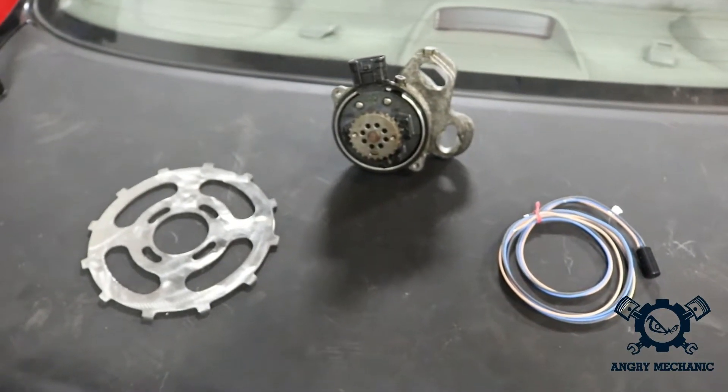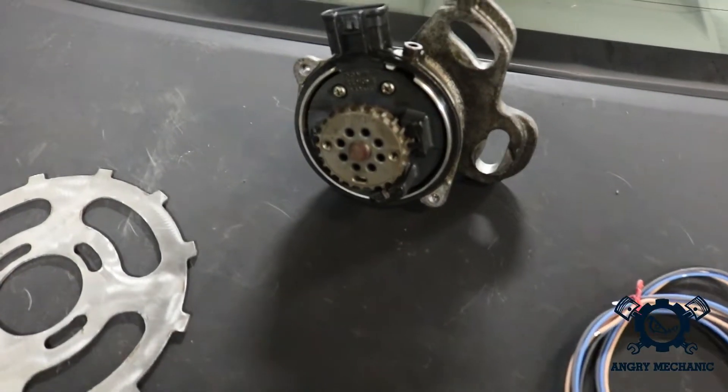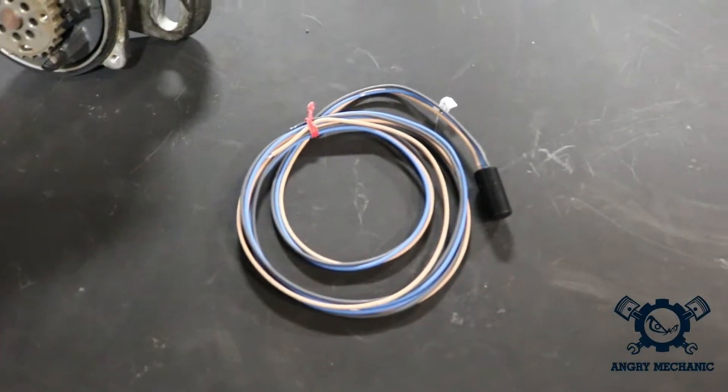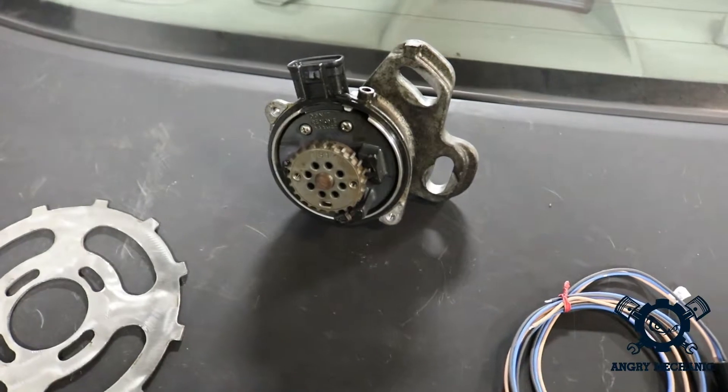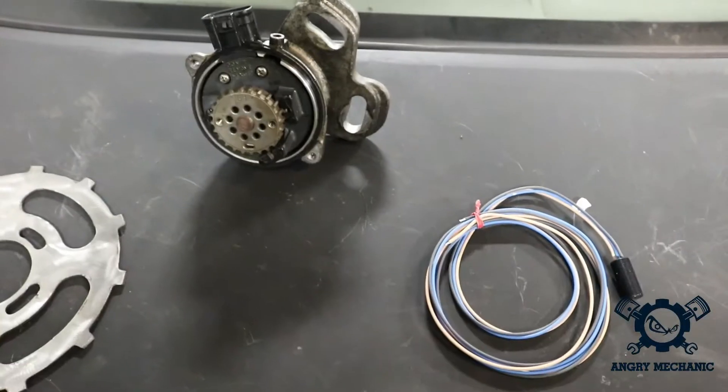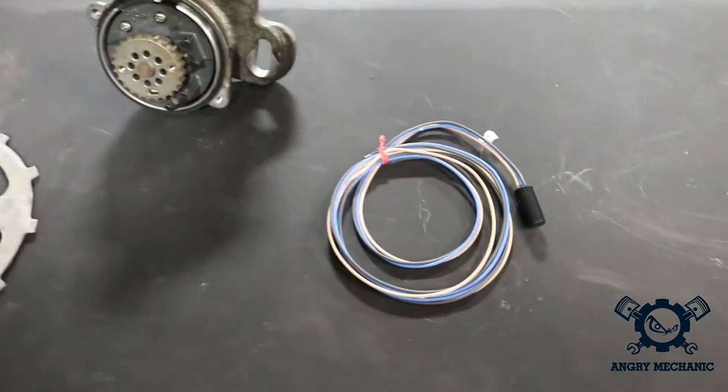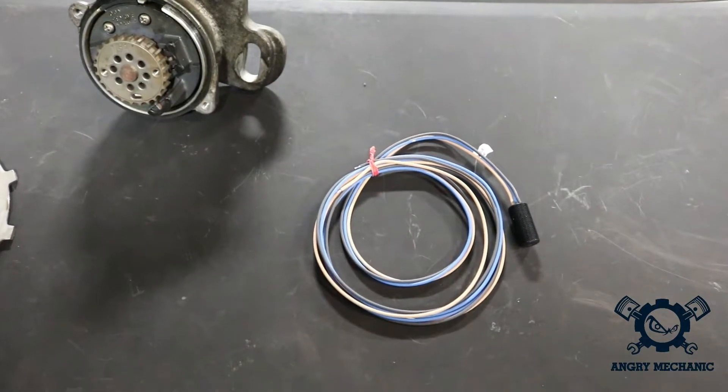So for the sake of today's demonstration, we are converting from a magnetic style pickup to a Hall Effect pickup. So what you ask is the difference between a magnetic style pickup versus a Hall Effect. Besides the fact that a magnetic sensor uses two wires and a Hall Effect uses three wires.